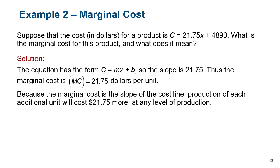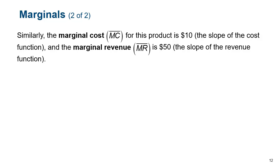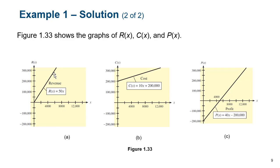Marginal revenue is different from marginal profit, because marginal profit is how much profit goes up — which was $40 each, accounting for cost. Marginal revenue is just how much revenue goes up, which in this case is $50. It always comes back to slopes. Our revenue function has a slope of $50, so marginal revenue is $50. Our cost has a slope of $10, so marginal cost is $10. Our profit has a slope of $40, so marginal profit is $40. Those are marginals — nice and simple, don't overthink them.